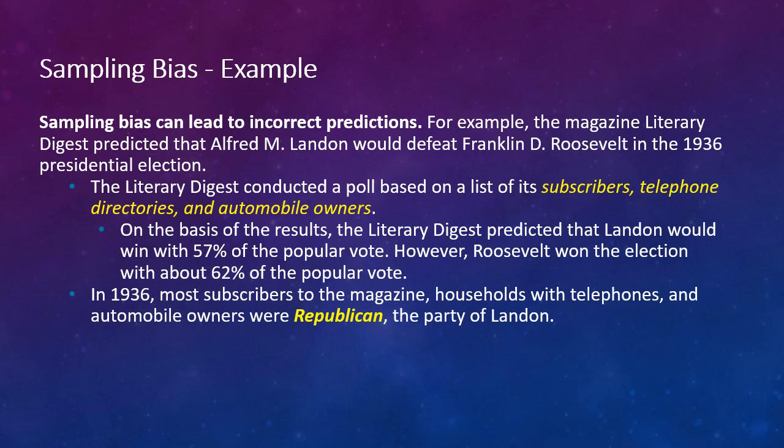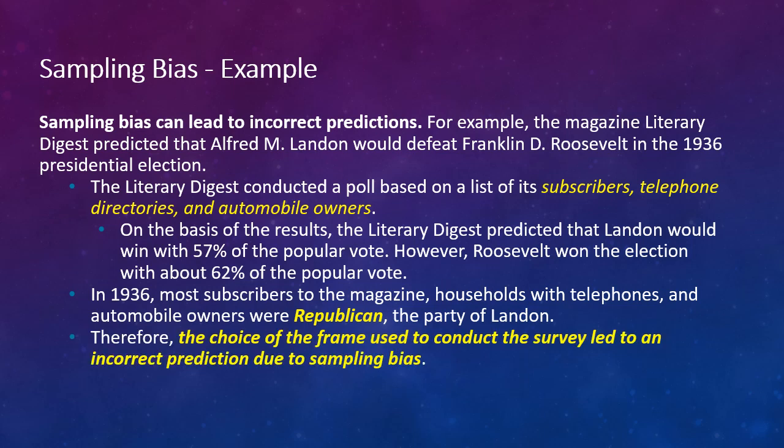This survey was in 1936, which is still in the height of the Great Depression, and most subscribers to the magazine or those households that had telephones or automobiles were Republican, which was the party of Landon. Therefore, the choice of the frame used to conduct the survey led to an incorrect prediction due to sampling bias. Essentially, there was an under coverage of Democrats in the poll and they basically chose frames that were more biased towards the Republican Party.